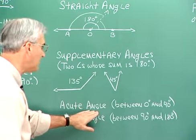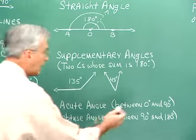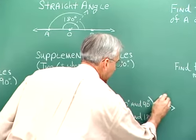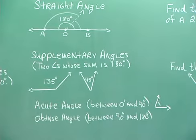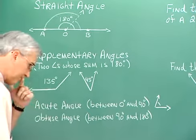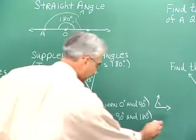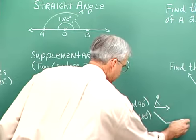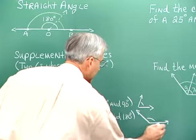An acute angle is an angle that is between 0 and 90 degrees. An obtuse angle is one which is greater than 90 degrees but less than 180 degrees.